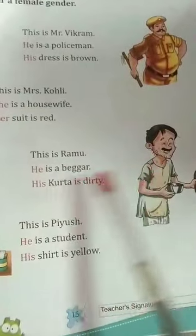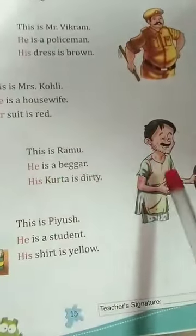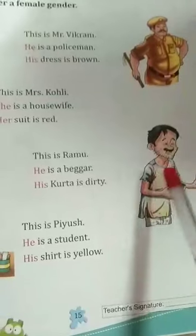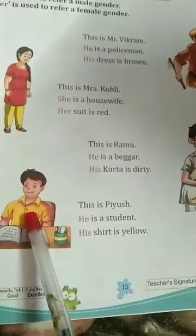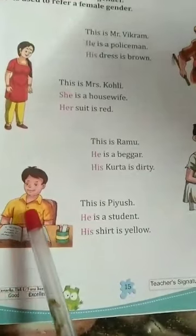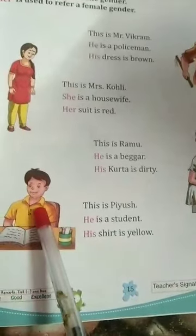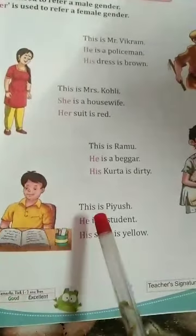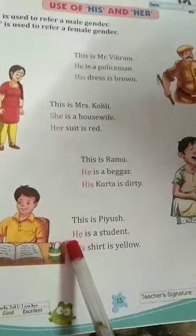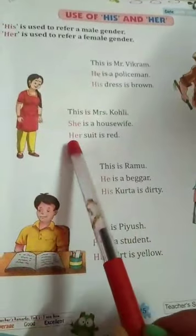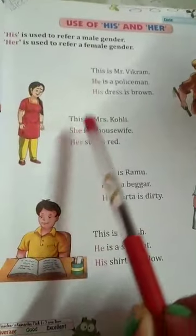This is Ramu. He is a beggar. His kurta is dirty. This is Piyush. He is a student. His shirt is yellow. He refers to male gender. She refers to female gender.